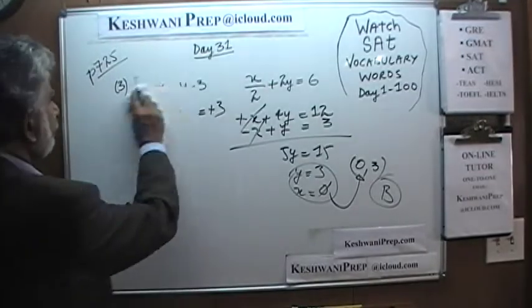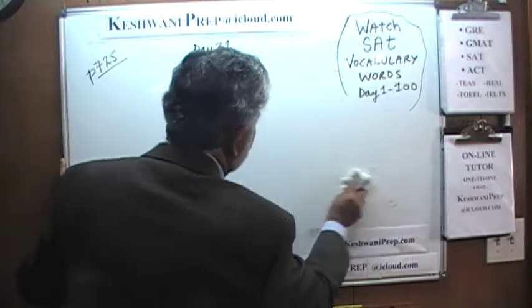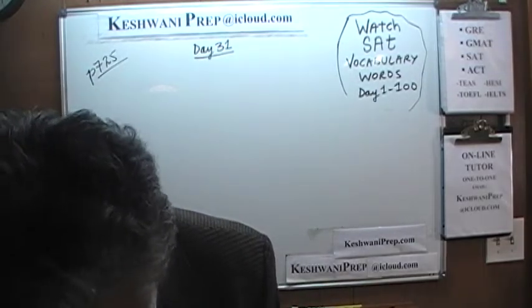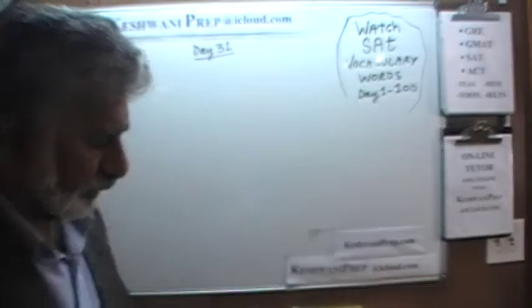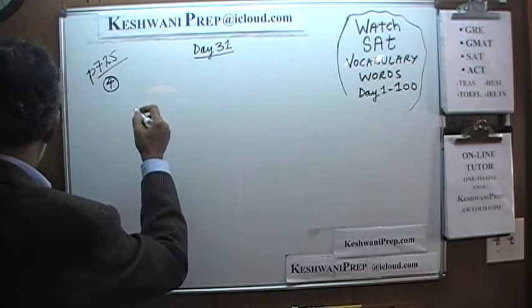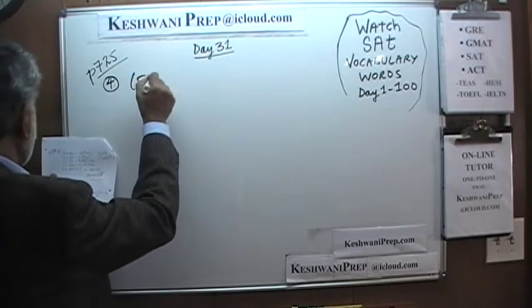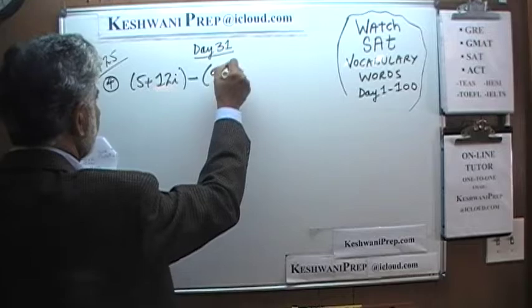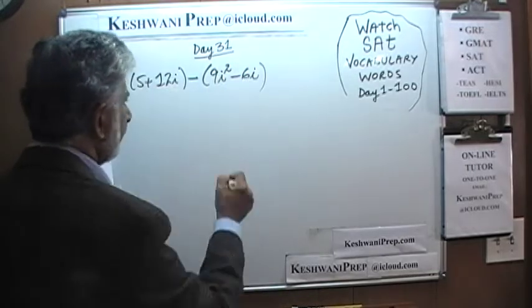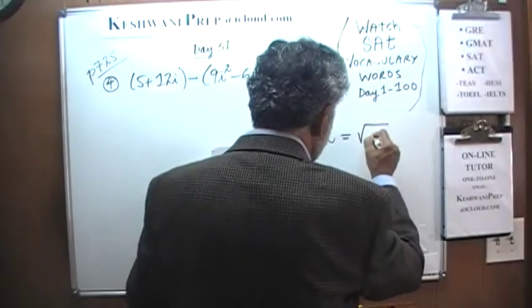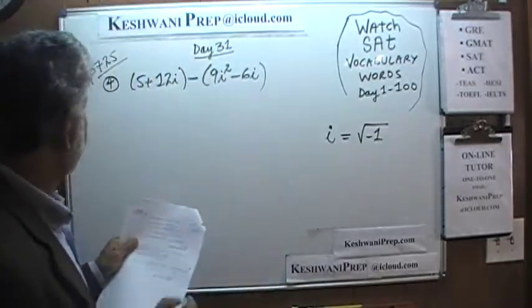Let's look at number 4. We have 5 plus 12i minus 9i squared minus 6i. The letter i is actually read as iota — the Greek letter iota. It represents, as you already know, the square root of negative 1. It is an imaginary number. Let's continue: 5 plus 12i, minus 9i squared.